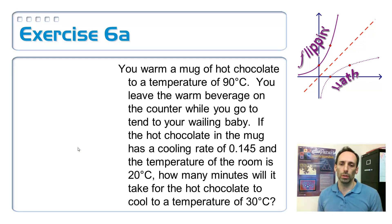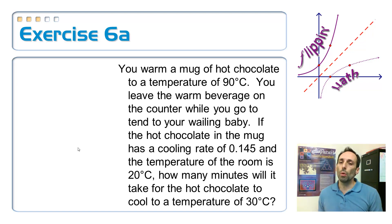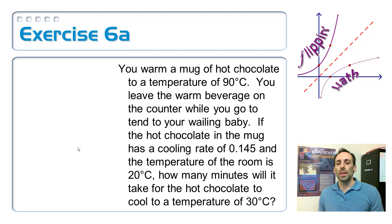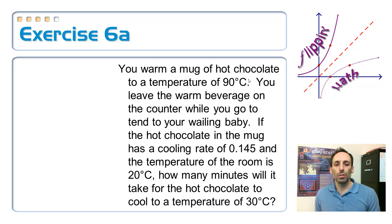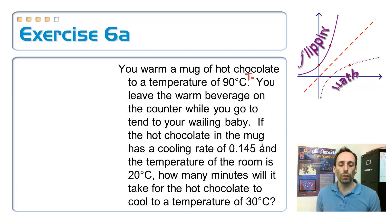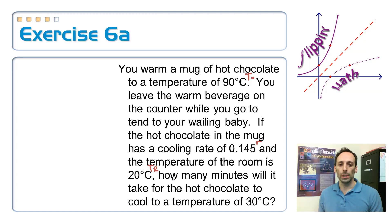Let's apply that equation to a warm mug of hot chocolate. You warm it to 90 degrees Celsius, leave it on the counter while you tend to your baby, and the cooling rate is 0.145. The room temperature is 20 degrees Celsius. We want to know how many minutes it will take to cool down to 30 degrees Celsius. So: T-sub-zero is 90, R is 0.145, T-sub-R is 20, and the target temperature T is 30.